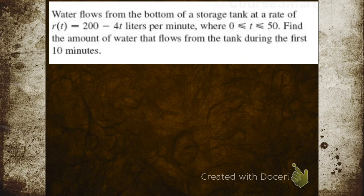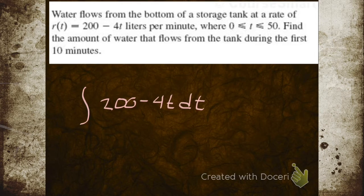Find the amount of water that flows from the tank during the first 10 minutes. So if we integrate the flow rate, we're going to get the volume. And that's what we want to do. Let's integrate that flow rate, 200 minus 4t dt. Let me get a better color, one that goes with brown better. And now we're going to make it a definite integral. We're going to integrate from what to where? Are we going to go from zero to 50? Zero to 10. We're going to go from zero to 10 because we want to know the first 10 minutes.